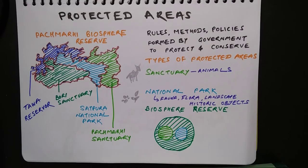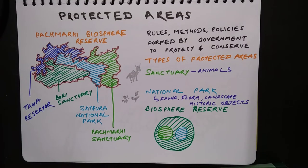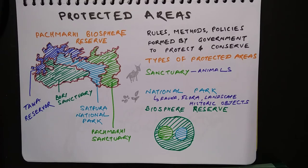Protected areas are areas declared by the government so that conservation efforts can be carried out in certain demarcated areas. Various rules, methods, and policies are formed by the government to protect and conserve plants and animals. There is a dedicated department in India for this purpose, called the Forest Department.